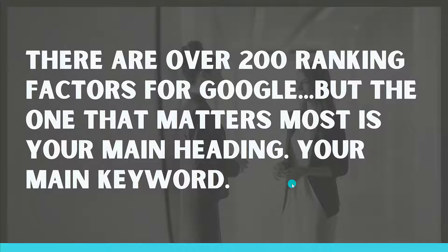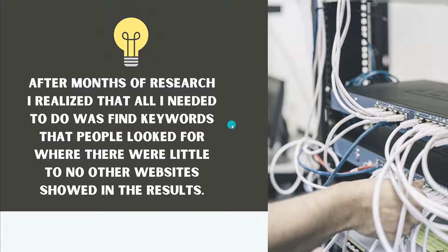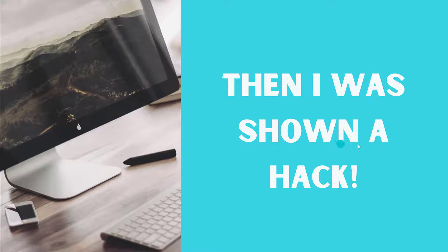What does Google use to rank your keywords? There are over 200 ranking factors for Google. How are we ever going to meet all of their criteria? It is extremely difficult, but the one that matters the most is your main heading — your main long-tail keyword. After months of research, I realized that all I needed to do was find keywords that people looked for where there were little to no websites that showed up in the results. And I was shown a hack that is completely free, and I'm going to show you it right now.